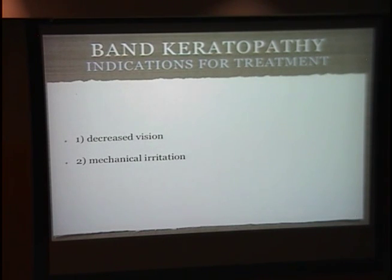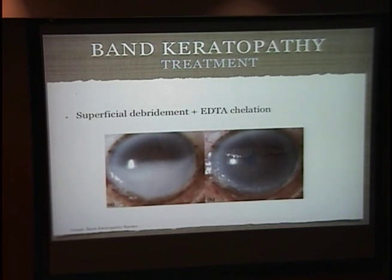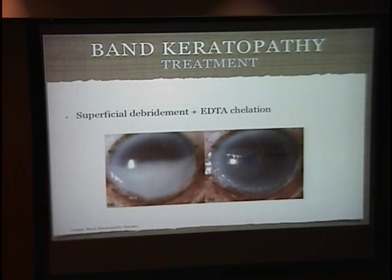Indications for treatment are decreased vision or mechanical irritation, especially as soon as it covers the central visual axis. The mainstay of treatment is surgical debridement followed by EDTA chelation therapy. Here's a nice image of band keratopathy before and after treatment. It can be done under topical anesthesia: first remove the epithelium with a sponge or blade, apply EDTA chelation, then remove further calcium deposits with blunt dissection, and cover the corneal defect with a bandage contact lens or amniotic membrane.